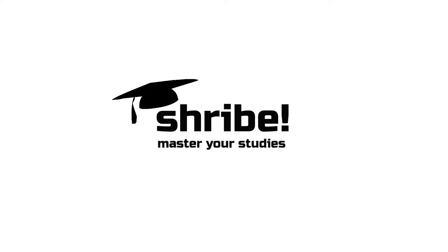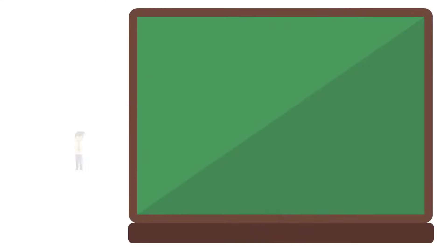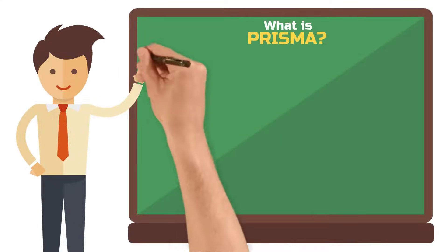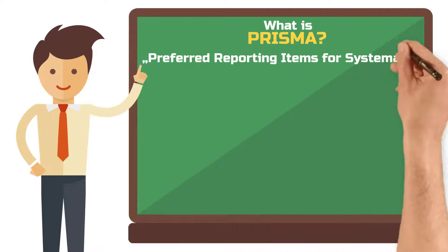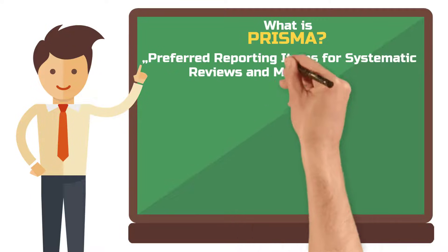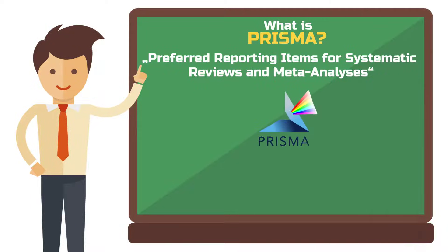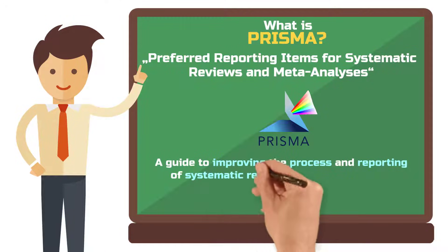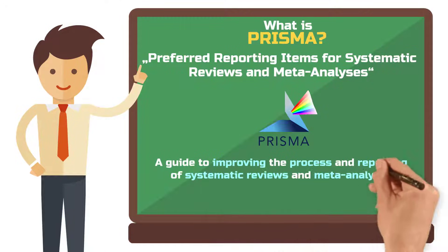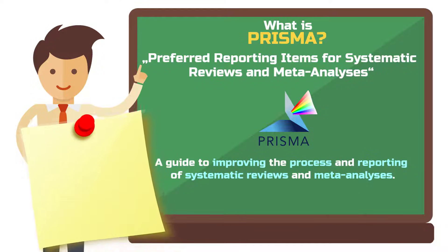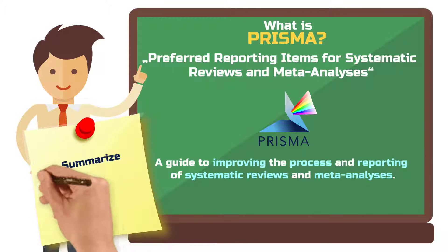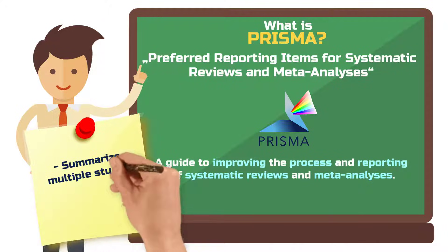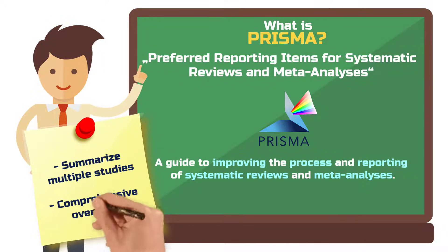PRISMA stands for Preferred Reporting Items for Systematic Reviews and Meta-Analysis. It's a guideline developed to improve the process and reporting of systematic reviews and meta-analyses. These literature-based studies are particularly valuable because they summarize the findings of many individual studies, providing a more comprehensive picture of a certain topic.